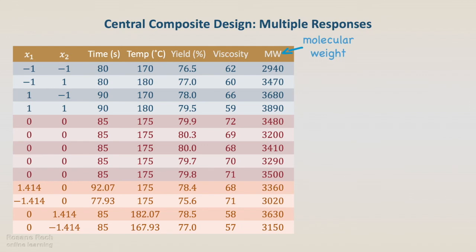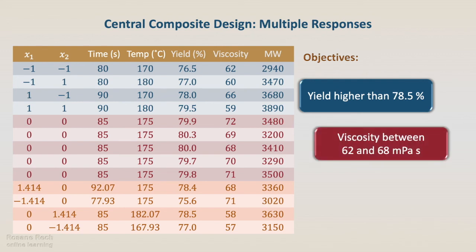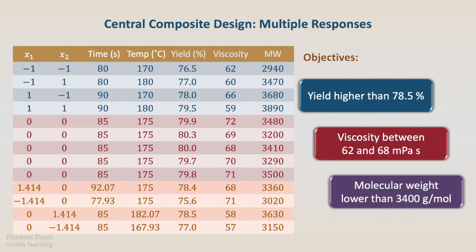Sometimes the objective is not to maximize or minimize only one response, but the optimized conditions must meet the goals of several responses. In this example, the objectives are yield higher than 78.5%, viscosity between 62 and 68 millipascal seconds, and molecular weight 3400 grams per liter.